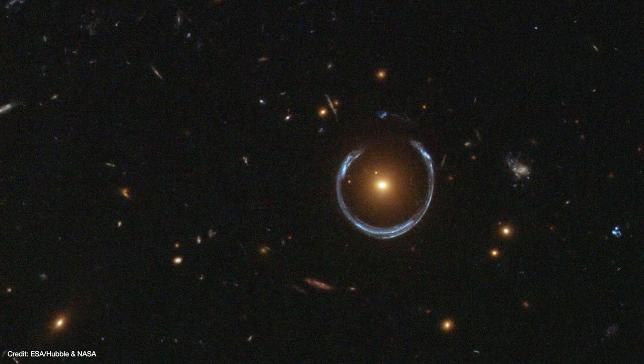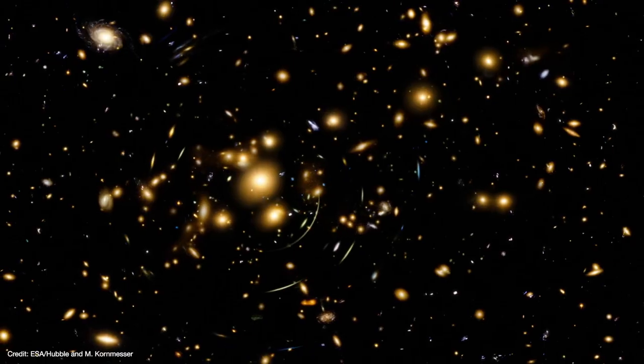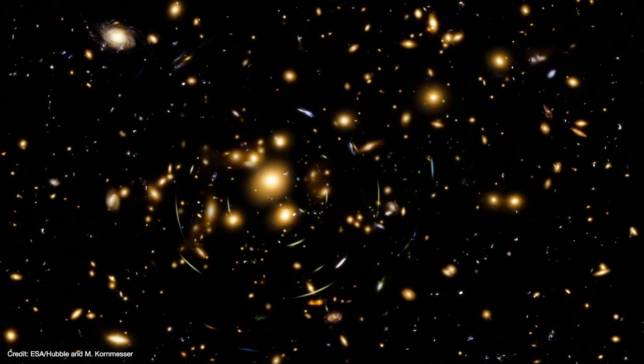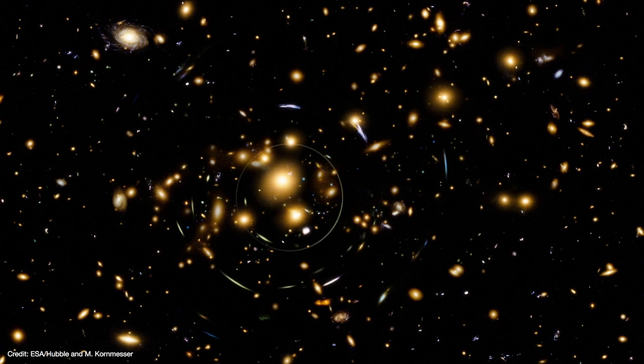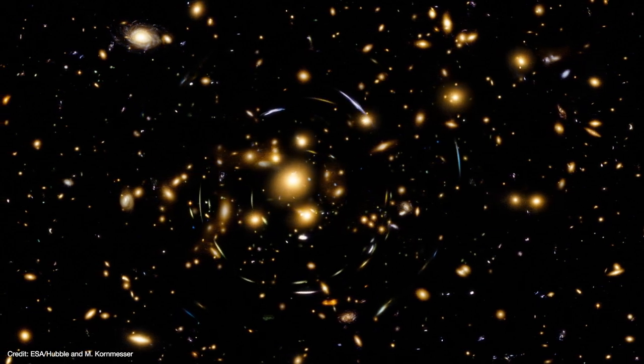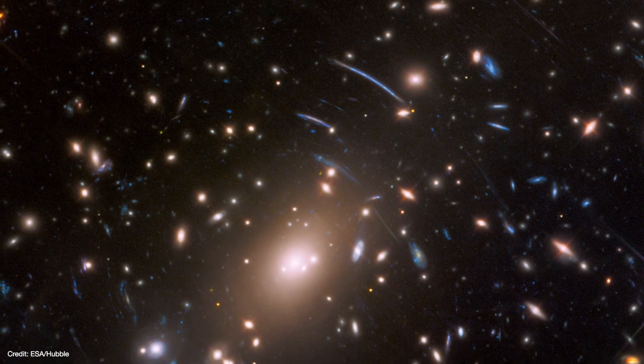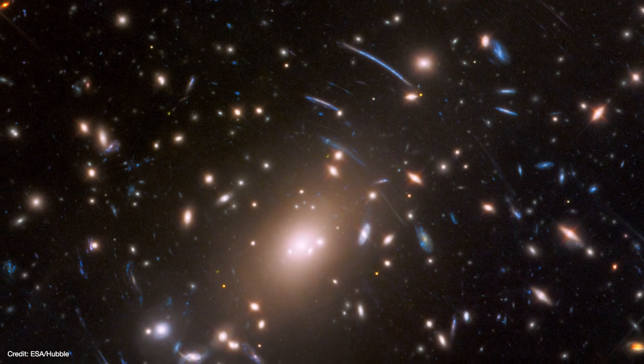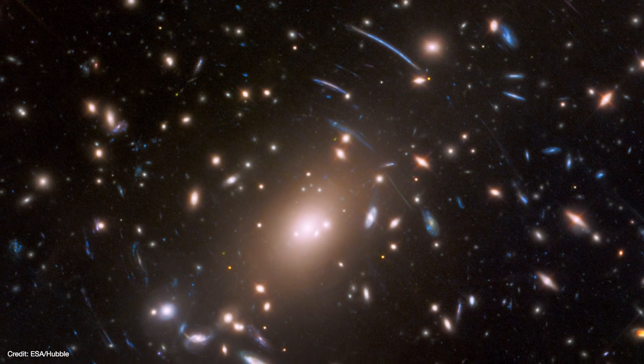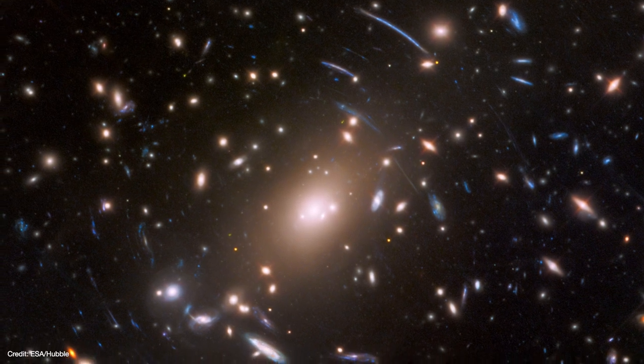But to gravitationally lens the very weak light from a very distant galaxy, you need the mass of an entire foreground cluster of galaxies. But those clusters are lumpy, with blobs of matter here and there. So instead of a ring, the background galaxy gets distorted into several arcs of light. Exactly how those arcs are formed depends on the geometry of the alignment and the distribution of matter in the lensing cluster.